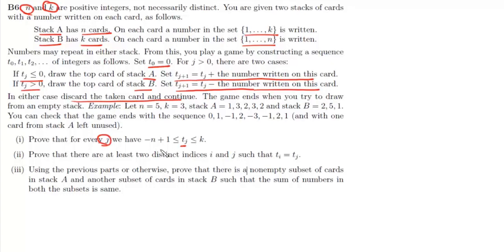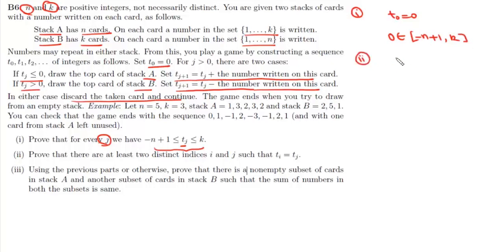The first part asks us to prove that for every j, T_j lies between -(n-1) and k. We'll prove this using induction. T_0 is 0, and 0 lies between -(n-1) and k. Now let it be true for T_j — that is, T_j lies in the interval [-(n-1), k]. Using this, we need to prove T_{j+1} also lies in this interval. We take two cases.